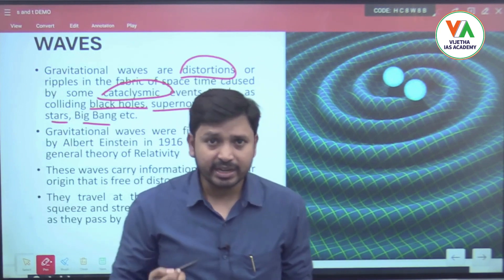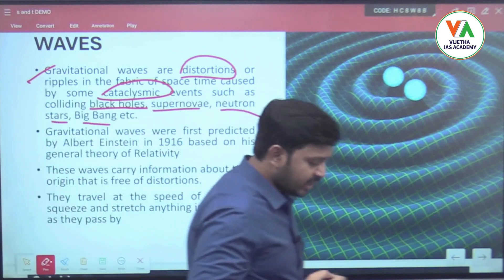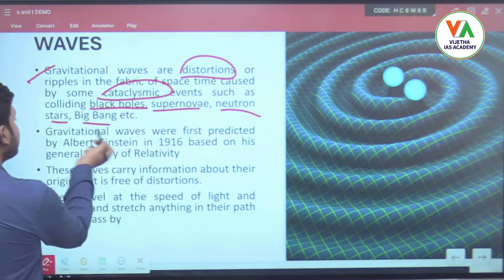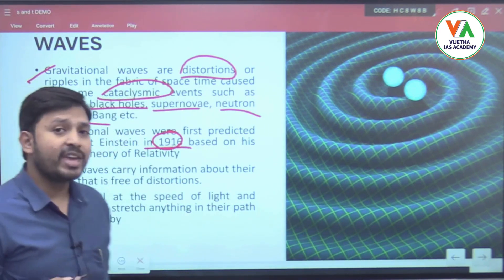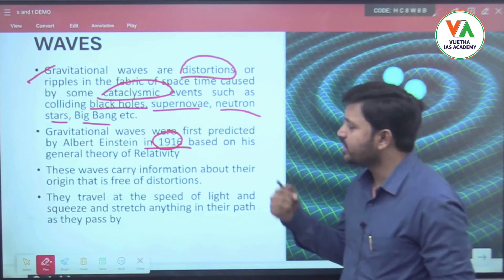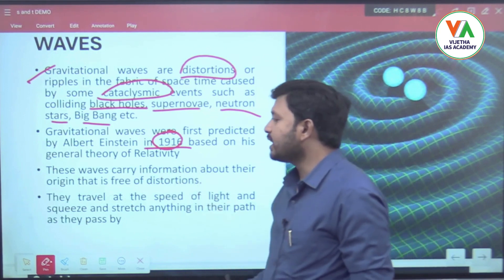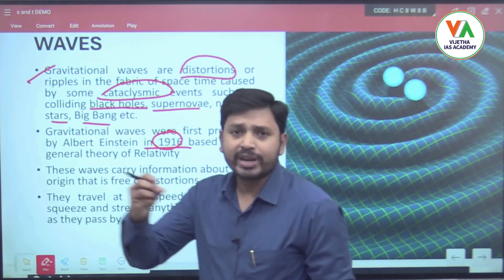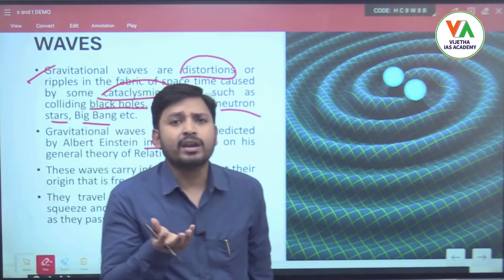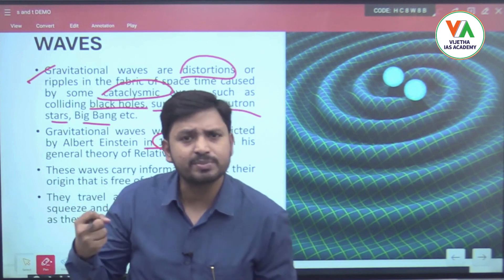Gravitational waves were first mentioned by Albert Einstein in 1916, based on his theory of relativity. They carry information — if a big event has occurred in space and these vibrations are observed by instruments on Earth's surface, we can determine that something has happened in space and investigate what that event was.